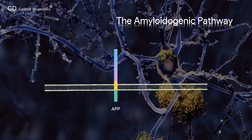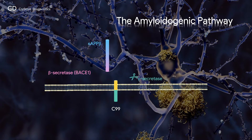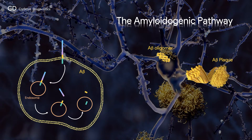The amyloidogenic pathway leads to neurotoxic abeta generation. BACE-1, the major beta-secretase in the brain, mediates the first proteolysis step, which releases a large N-terminal ectodomain sAPP-beta into the extracellular medium. A 99 amino acid C-terminal fragment remains in the membrane. The newly exposed C99 N-terminus corresponds to the first amino acid of abeta. The amyloidogenic pathway occurs in the endocytic pathway, as beta-secretase mediates the first proteolysis step in mature endosomes.